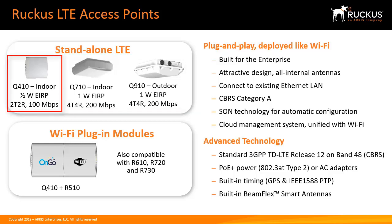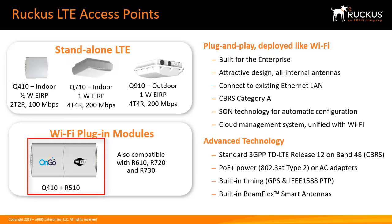The Q410 is a single-radio product which can use 20 MHz worth of RF capacity. In addition, the Q410 can be connected to our R510. So, for customers who have purchased our R510 AP, they can share the same Ethernet using both Wi-Fi and LTE CBRS spectrum.